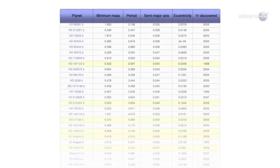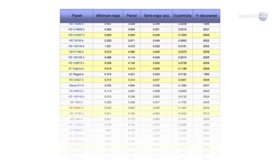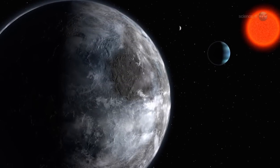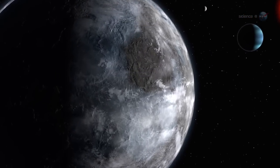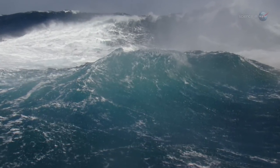As the numbers mount, it seems to be just a matter of time before Kepler finds what astronomers are really looking for: an Earth-like planet orbiting its star in the Goldilocks zone, that is, at just the right distance for liquid water and life.